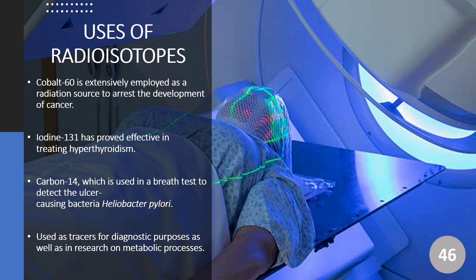Very little radioactive material is needed in diagnostic techniques because the radiation emitted is so easy to detect. However, therapeutic applications usually require much larger doses because the purpose is to preferentially kill diseased tissue. For example, if a thyroid tumor were detected, a much larger infusion of iodine-131 — thousands of rem, as opposed to a diagnostic dose of less than 40 rem — could help destroy the tumor cells. Radioactive strontium is also used to not only detect but ease pain in bone cancers.